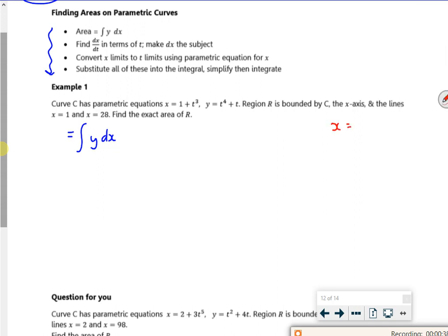So x is 1 plus t cubed, so dx by dt is 3t squared. It says make dx the subject, because I want to replace this dx. So dx is 3t squared dt. So that's going to become 3t squared dt.